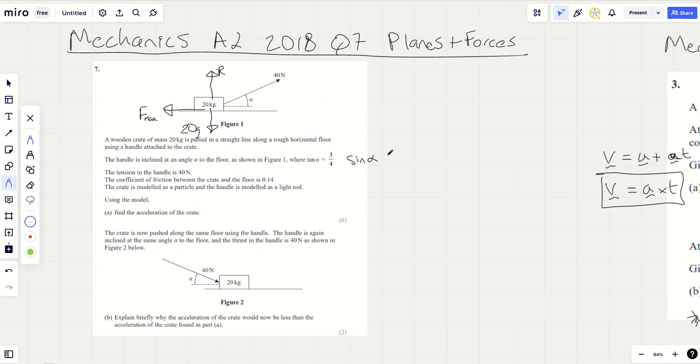Tan alpha is three quarters, so do the prep work. That means sine alpha is three fifths and cos alpha is four fifths. If you're wondering how I'm getting those numbers, I'm just drawing an alpha here. Opposite over adjacent is three over four. You can use Pythagoras to work out that as five.